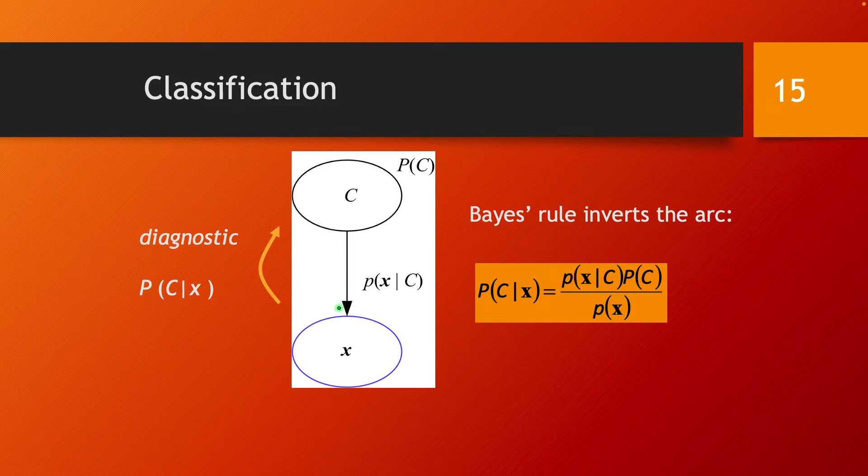As we did in the other examples on graphical models, we can do a diagnostic inference going against the edge to reason about the probability of class C given the data point X. And as we did in previous examples, we apply Bayes' rule to get the following: the probability of C given the data point X is, by Bayes' rule, probability of X given C times P of C divided by P of X.